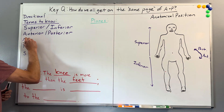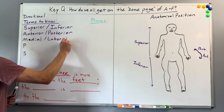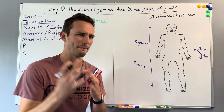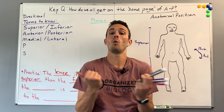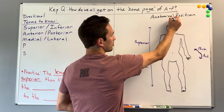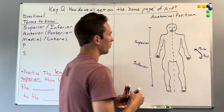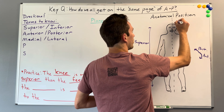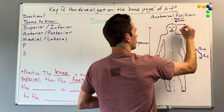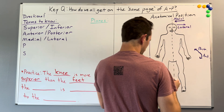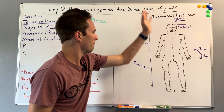Next, we've got medial versus lateral. Medial kind of sounds like the word middle, and medial means towards the midline, while lateral means away from the midline. Pretend if I were to cut Josh right in half — that would be his midline. Anything going towards that midline is considered medial. Anything moving away is called lateral. You've probably heard of a lateral movement meaning you go outward.